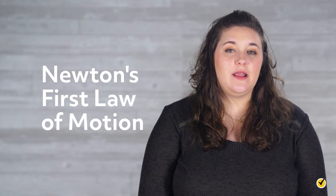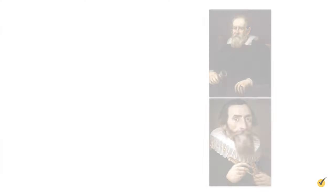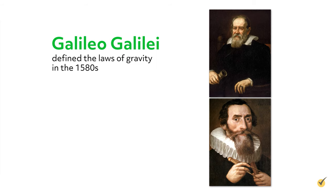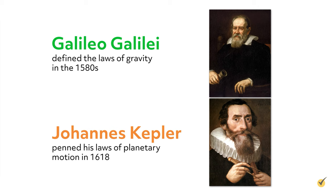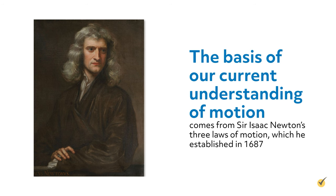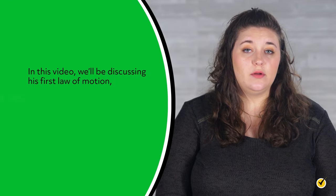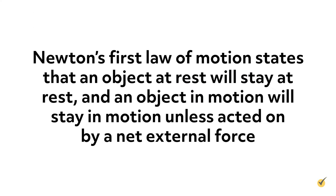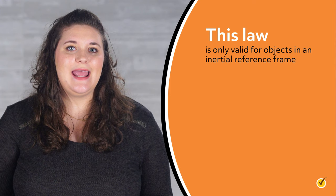Hi and welcome to this review of Newton's first law of motion. In this video, we'll see how it forever changed people's perception of how and why things move. Understanding how and why things move has been the goal of scientists for thousands of years. Galileo Galilei defined the laws of gravity in the 1580s, and Johannes Kepler pinned his laws of planetary motion in 1618. The basis of our current understanding comes from Sir Isaac Newton's three laws of motion, established in 1687. We'll be discussing his first law of motion, also known as the law of inertia. Newton's first law states that an object at rest will stay at rest, and an object in motion will stay in motion, unless acted on by a net external force. This law is only valid for objects in an inertial reference frame — a frame of reference moving at constant velocity.